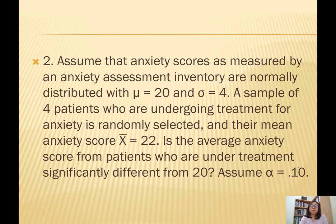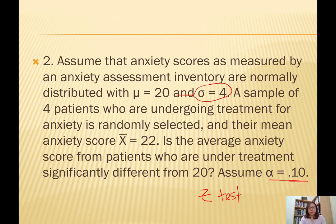Question 2 says assume that anxiety scores as measured by an anxiety assessment inventory are normally distributed with mu of 20 and standard deviation of the population of 4. A sample of 4 patients undergoing treatment for anxiety is randomly selected, and their mean anxiety score x-bar is 22. Is the average anxiety score from patients under treatment significantly different from 20, the population mean? Assume alpha of 0.1. Since we know mu, x-bar, and critically the standard deviation of the population, we would do a z-test. The alpha of 0.1 tells you the cutoff for the acceptance and rejection regions.